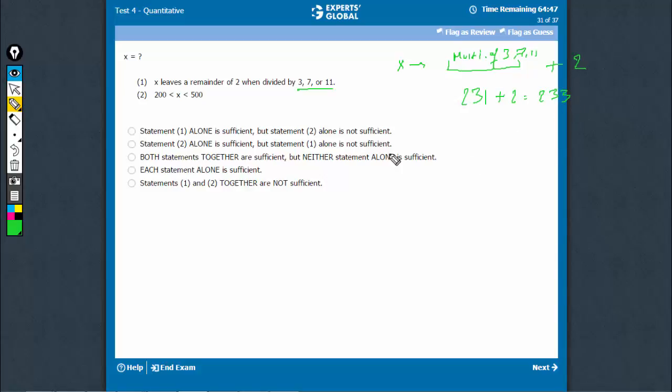But this is not the only number which will lead to such remainders. 231, remember, is the smallest number. Any multiple of 231, 462 will also be a multiple of 3, 7, 11 and therefore, when we add 2 to it, this would also lead to the same result.